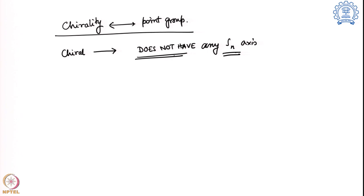The presence of an SN axis is directly connected to chirality. When we define chirality, we say we are taking a mirror image — that means a reflection, a sigma operation. Then we take this mirror image and try to fit it with the original molecule. We are doing a sigma operation and a CN operation, which is essentially an SN operation. If the molecule does not fit its original structure, you do not have an SN axis, meaning you have a chiral molecule.